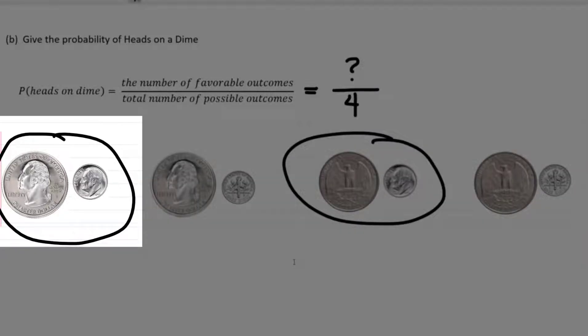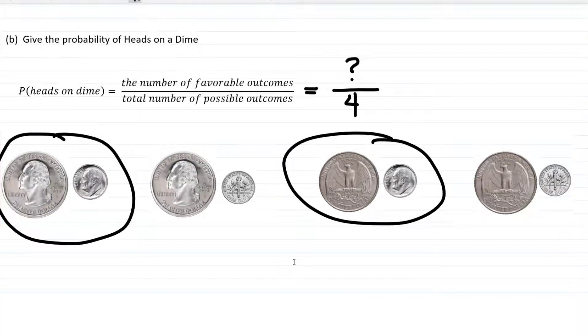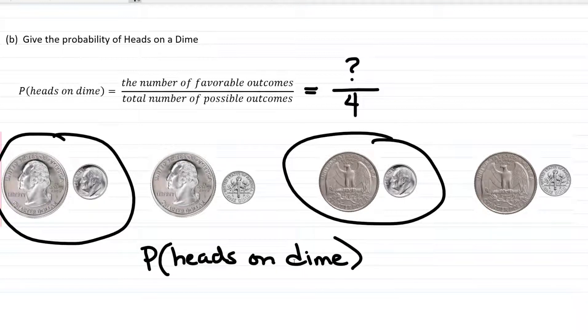Heads on the quarter, heads on the dime, or tails on the quarter, heads on the dime. So if I want the probability of having heads on the dime, which you can write as p(heads on dime), we would have two favorable outcomes, two ways to get heads on the dime, divided by the four total possible outcomes. Now in probability, we do like to reduce fractions to lowest terms. So two-fourths is the same as one-half.